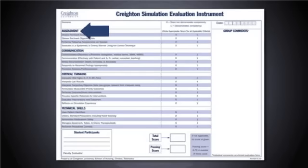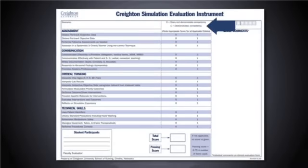You will also note that the Creighton SEI is divided into four components: assessment, communication, critical thinking, and technical skills. Under each component heading are competencies related to that particular component. For example, assessment is a component, and 'obtains pertinent subjective data' is one of the competencies that make up that component. There are a total of 22 possible competencies. Note that if a competency is deemed not applicable by the faculty, no score is assigned and it is not included in the calculation of the passing score. For example, it has been our experience that time has not always allowed for a review of documentation and therefore it has not been included in the calculation of the total score.